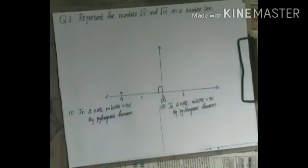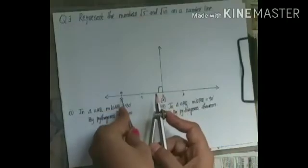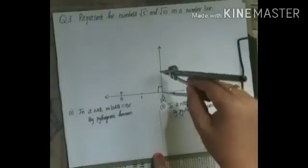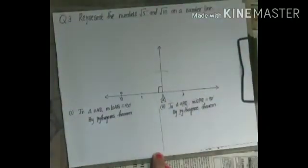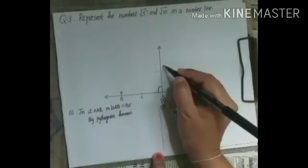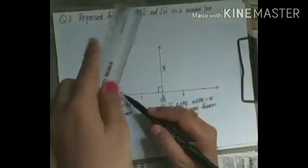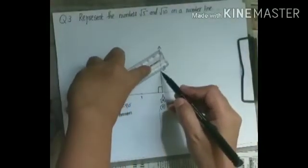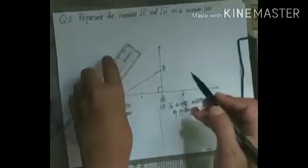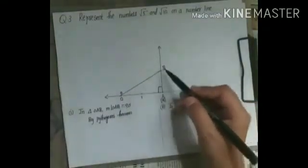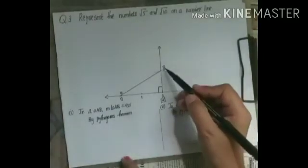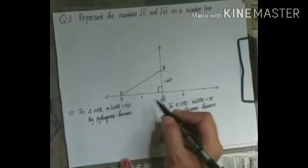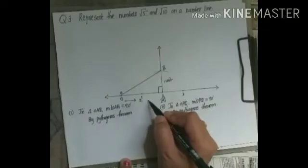Take the compass and set it to 1 unit (3 cm). Keep the compass on A and draw an arc. Name the arc point B. Join O and B — OB is the hypotenuse. AB is the perpendicular side of 1 unit and OA is the base of 2 units.